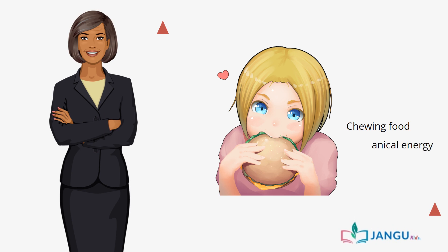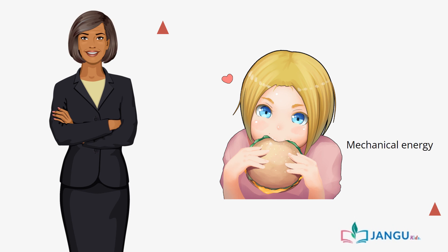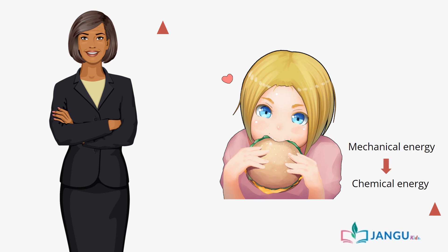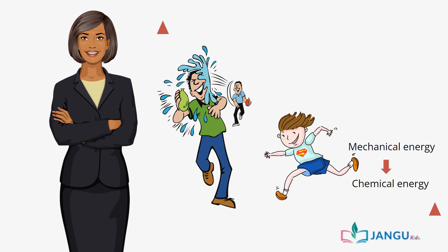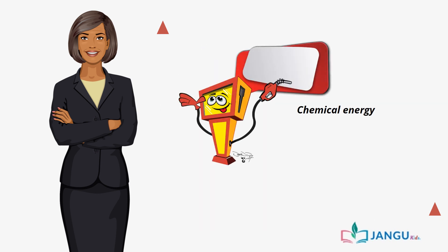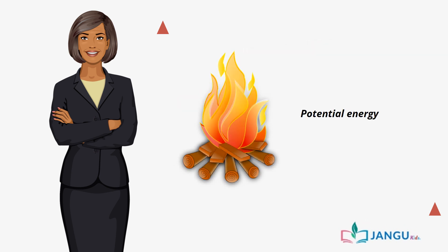When we chew food into small particles, mechanical energy is being used. When we swallow the food and it reaches our stomach, it undergoes a chain of reactions, thereby converting the mechanical energy into chemical energy. The chemical energy can further be converted into other forms of energy and utilized to perform various daily tasks such as playing and running.